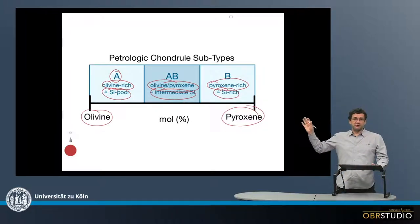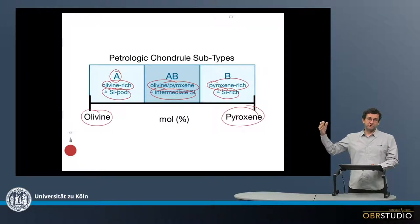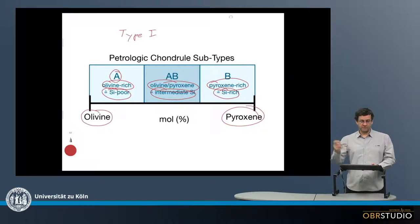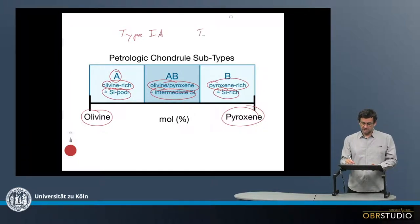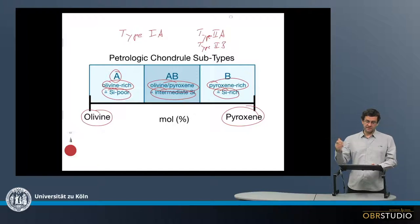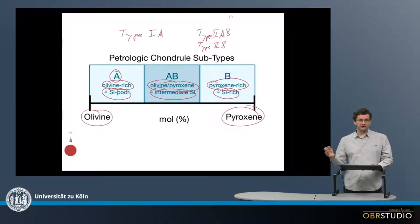It is called a subtype because this letter usually follows the Type 1/Type 2 classification. For example, a chondrule that is very magnesium-rich is a Type 1 chondrule, and if it is also very olivine-rich, it is a Type 1A chondrule. Accordingly, a Type 2 chondrule — an iron-rich chondrule — but with a lot of olivine is a Type 2A chondrule. Or if it is a Type 2 chondrule with a lot of pyroxene, it is a Type 2B chondrule. And if it is intermediate olivine-pyroxene, then it is a Type AB chondrule.